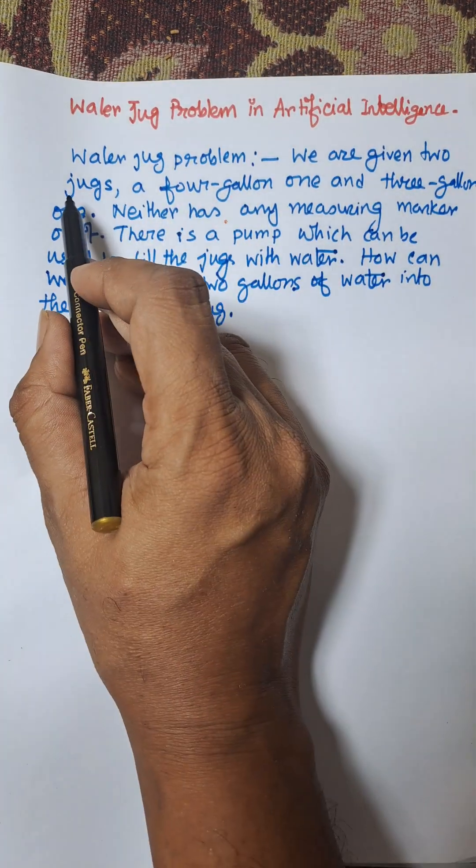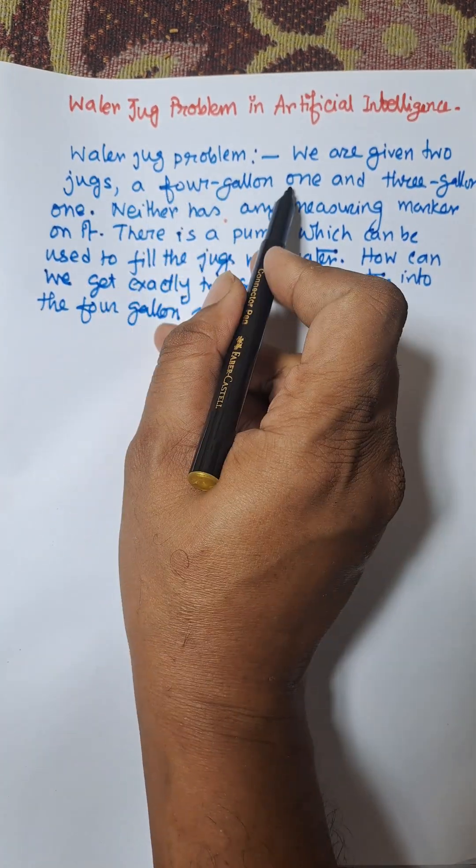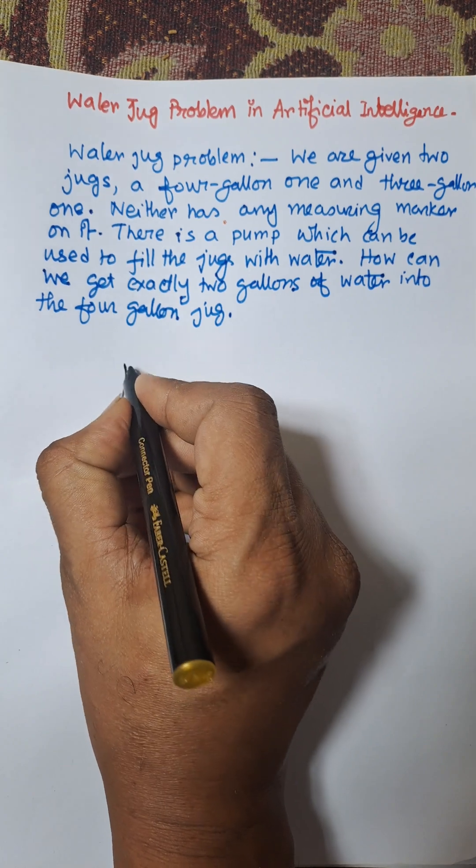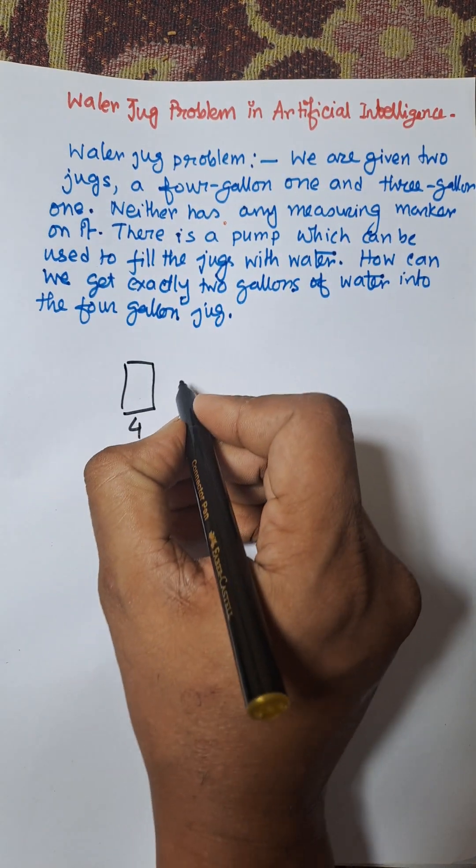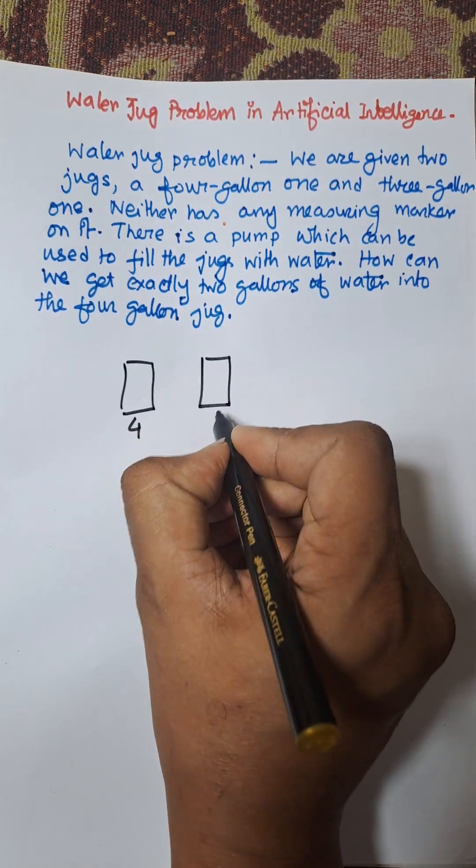Water jug problem - we are given two jugs, a 4-gallon one and a 3-gallon one.